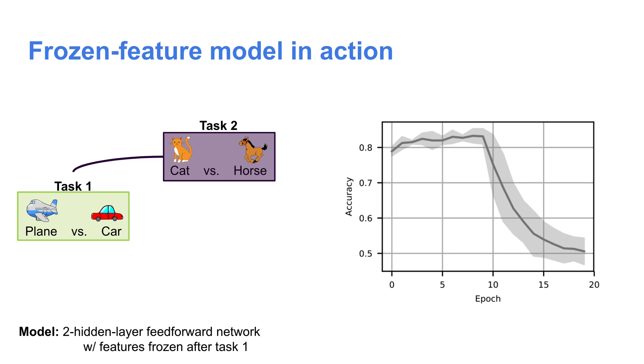Let's look at this frozen feature model in action. Again, we'll look at our two task sequence: task one vehicles and task two animals. We use a two hidden layer feedforward network and explicitly freeze the features after the initial task. As you can see, there's a great deal of forgetting. But the frozen feature model and the intuition from the linear regression would suggest that if we were to force the model to represent vehicles and animals orthogonally, then we could drastically reduce the degree of forgetting.